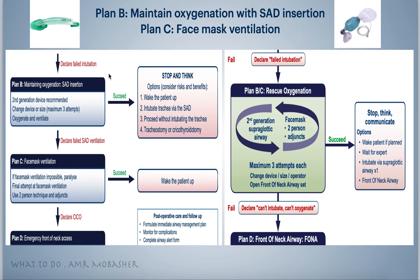Plan B: what if I failed Plan A? If I failed intubation, my mission now is to maintain the oxygenation of the patient. We have two options: the laryngeal mask, which is Plan B, and the classic face mask ventilation, which is Plan C. Usually we use the i-gel or second generation device.